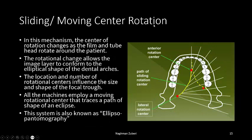In the sliding or moving center rotation, the center of rotation changes as the film and tube head rotate around the patient. This rotational change allows the image layer to conform to the elliptical shape of the dental arches. The location and number of rotational centers influence the size and shape of the focal trough. All modern machines employ a moving rotational center that traces a path in the shape of an ellipse — which is why it is also called ellipso-pantomography.